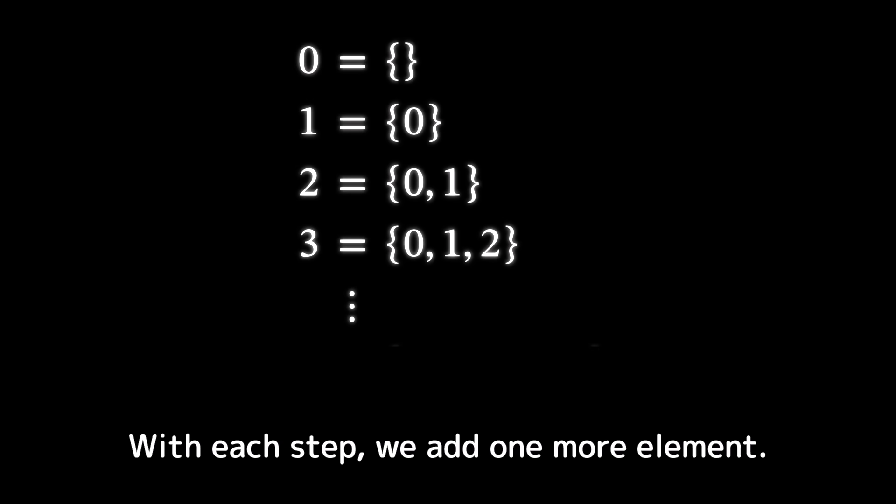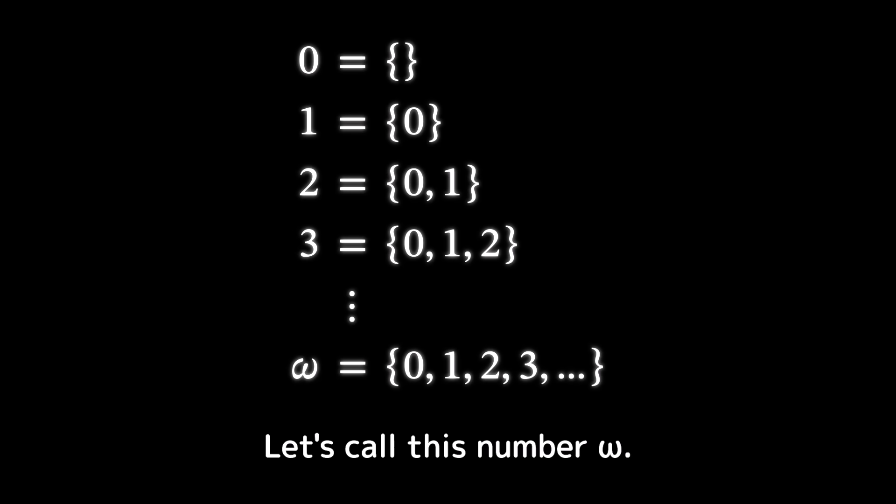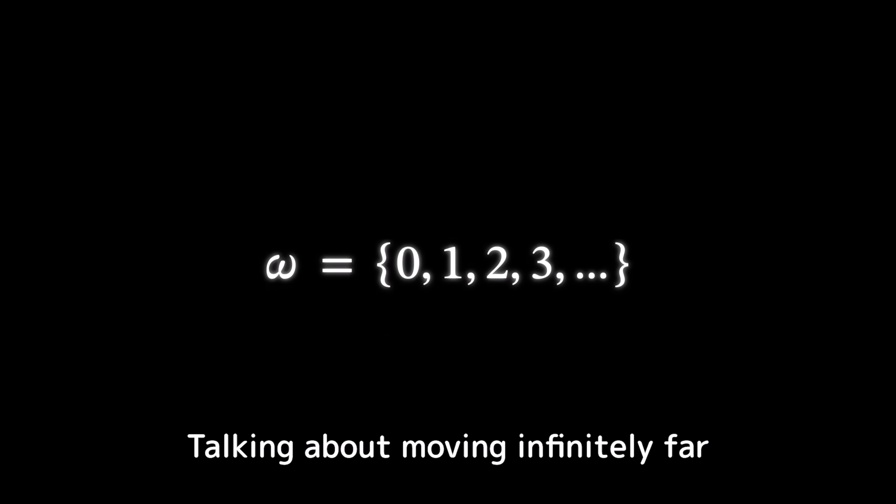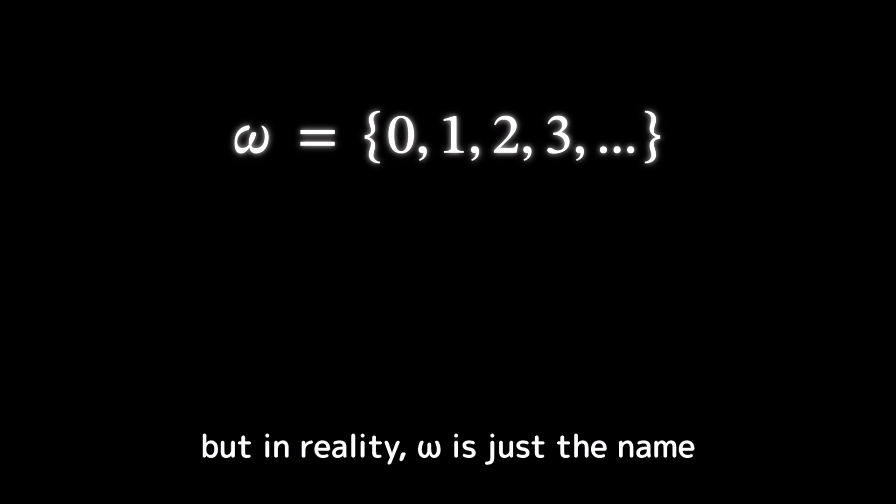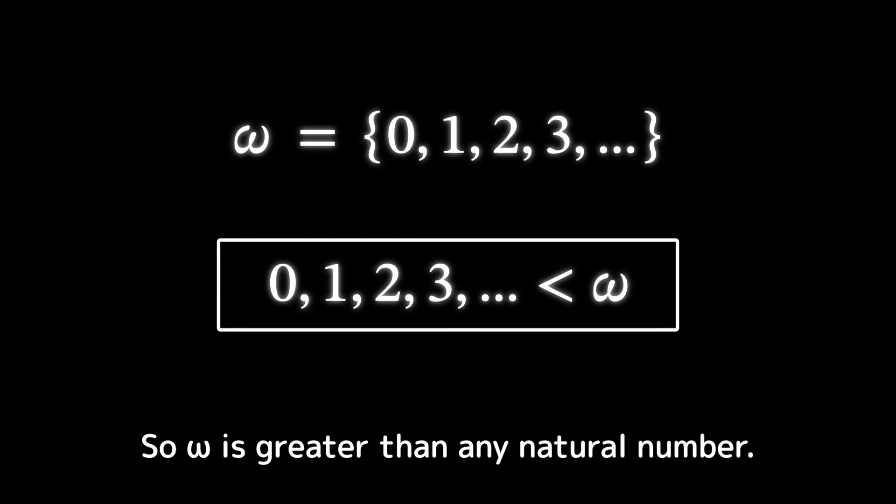With each step, we add one more element. So at the far end of this infinite process, we might consider a number like this. Let's call this number omega. Talking about moving infinitely far might sound suspicious, but in reality, omega is just the name we give to the set of all natural numbers. According to our earlier definition of order, contains means greater than. So omega is greater than any natural number. You can think of it as representing infinity.